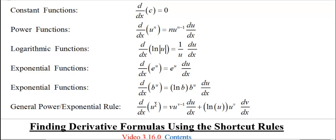And, in general, the derivative of u to the v, where these are both variables, is u times v to the v times u to the v minus 1 times du over dx, which is basically the power rule, plus, basically, the exponential rule, ln of u times u to the v times dv over dx.